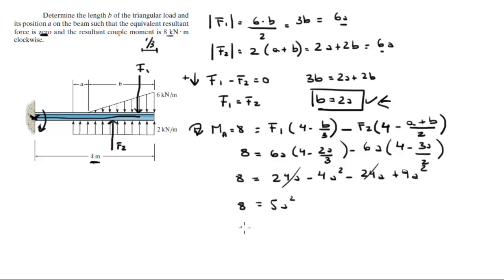So when you solve for A, you're going to get that it is equal to 1.265 meters. And you know that if you multiply by 2 you get B, so this times 2 is equal to 2.53 meters. Final answer for A, final answer for B.